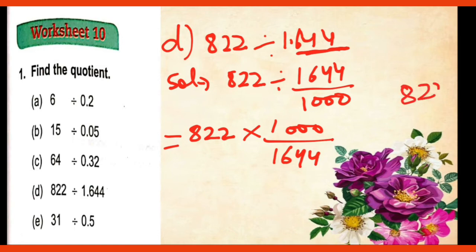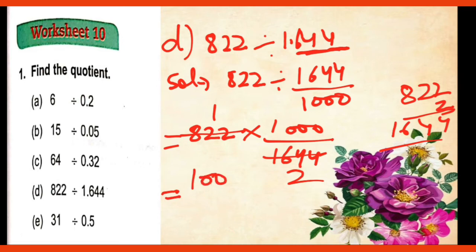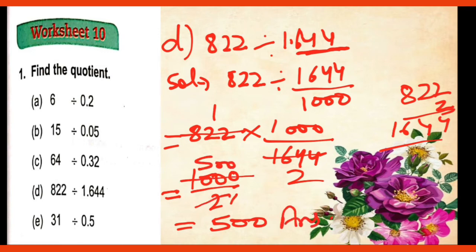So 822 twos are what? 2 twos are 4, 2 twos are 4, 8 twos are 16. So 822 and 822 twos are this 1,644. So 1,000 upon 2. That is equal to 500. 2 twos are 2, 10 and this, that. 500 will be our answer.